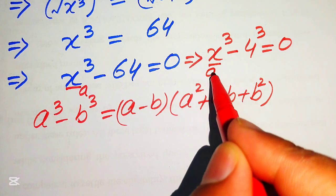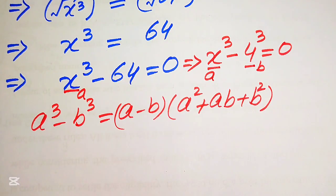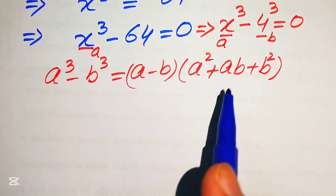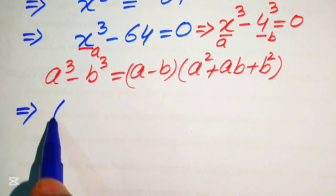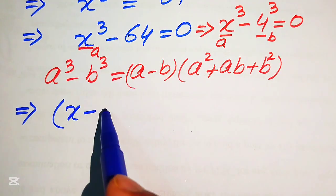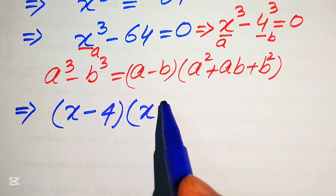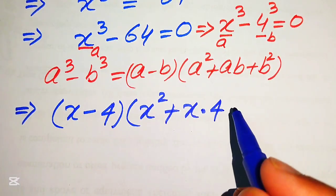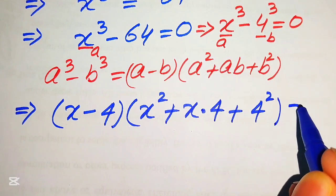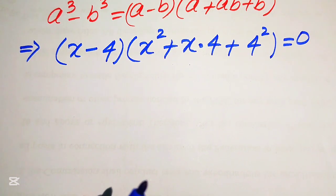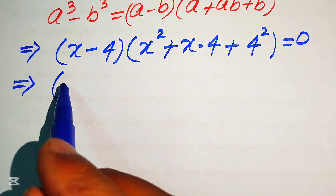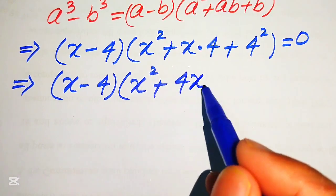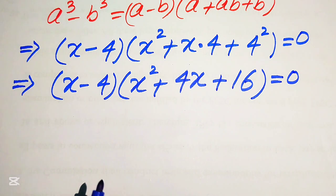Here the base of the first term is our a and the base of the second term is our b. Now we substitute these two values of a and b into the formula. After substituting, it is written as (x minus 4) times (x squared plus 4x plus 16) equals 0.